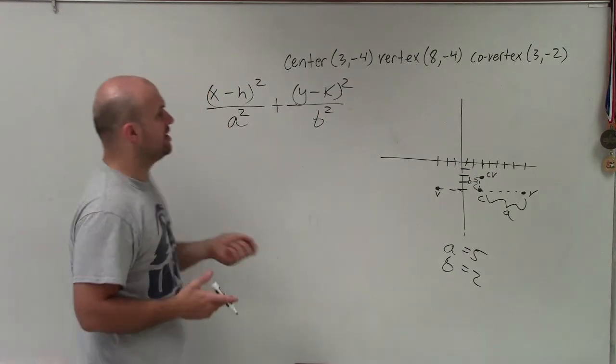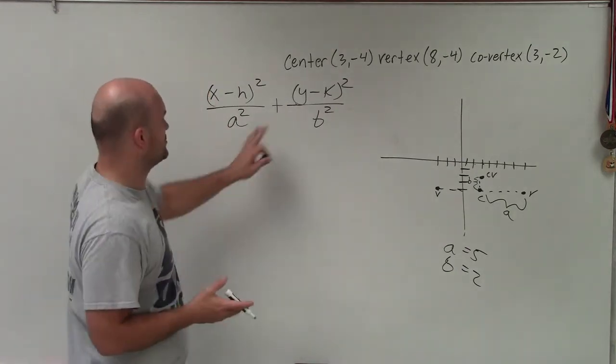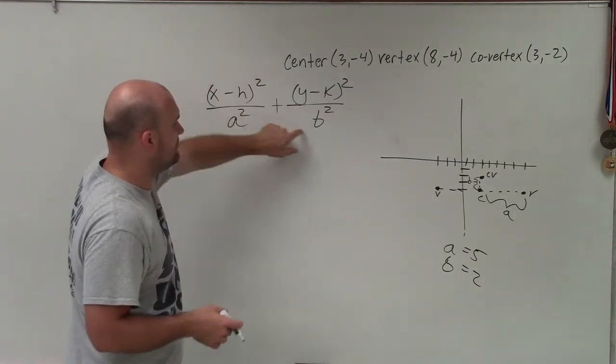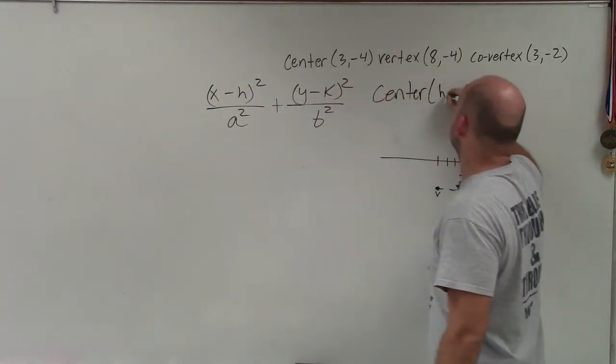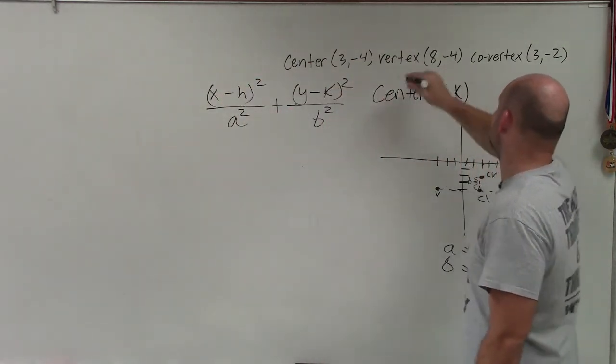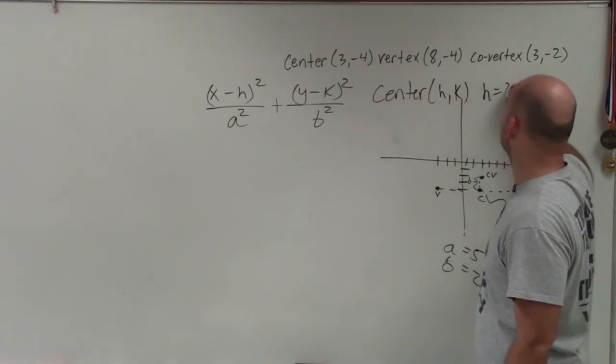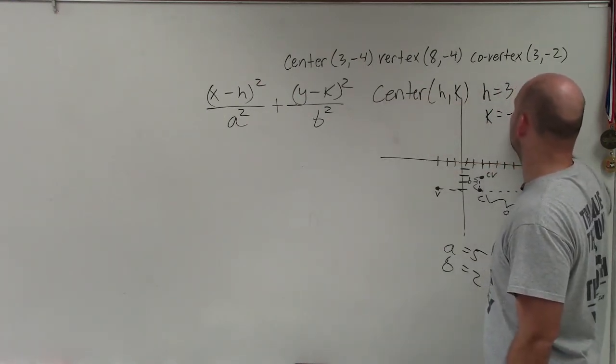We don't need to figure out the focus; they just asked us to write the equation. So we only need to know h and k, and a and b. Remember, the center is (h, k). Therefore, h equals 3, and k equals negative 4.